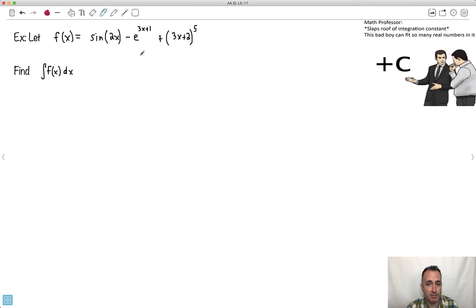So let's see if we can solve one of these. Math professor slaps the roof of the integration constant. This bad boy can fit so many real numbers in this. All right, let's do three different linear compositions just to show you how gross they look. Well, we can completely do this. Just spot it as an AX plus B, so to speak.